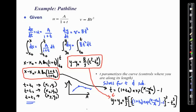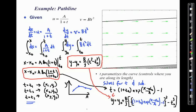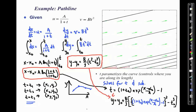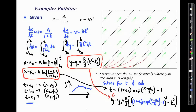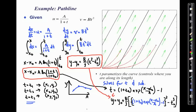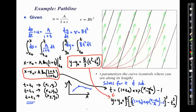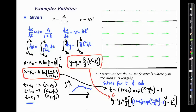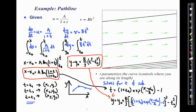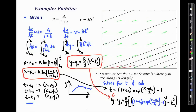What does this look like for our example? Here are the streamlines again in black, and I've released four different marked particles, calculating four different pathlines as a function of time — pathlines 1, 2, 3, and 4 — shown as red trajectories.